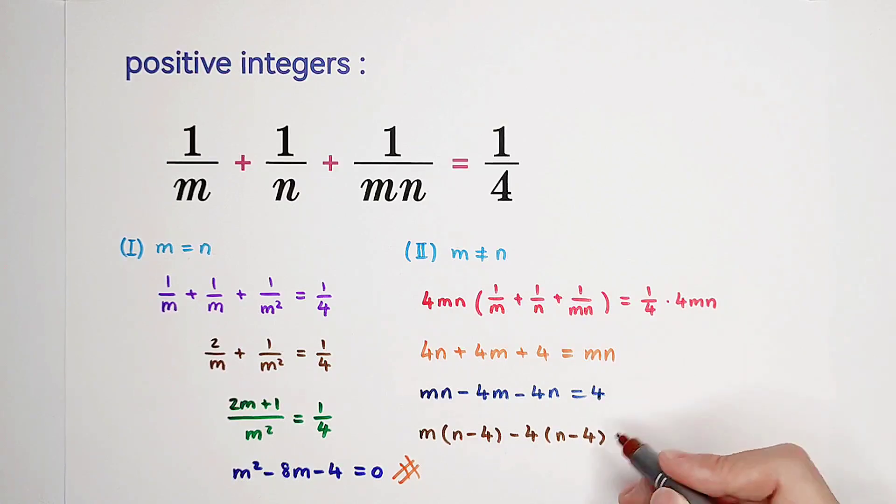They are actually equivalent. So I like to add it to the right-hand side. 4 plus 16 is 20. Then it is m minus 4 times n minus 4 equals 20.